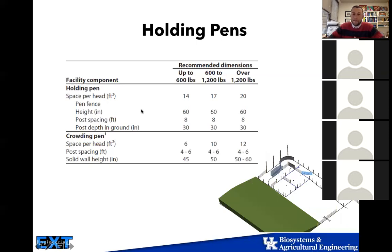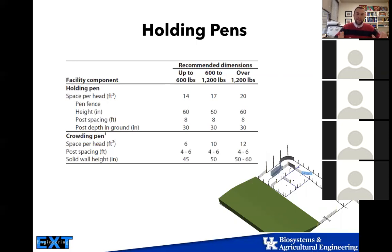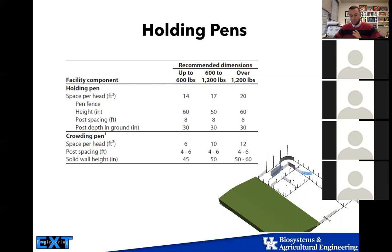Holding pens can be good for holding and sorting animals and queuing up different groups. We want these to be about 20 square feet per animal. We have all these dimensions available. If you need recommendations or want to draw something out, just tell us the number of animals, their size, age, and all those design considerations, and we can get a couple of different designs for you.